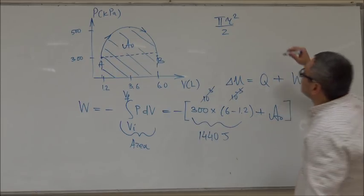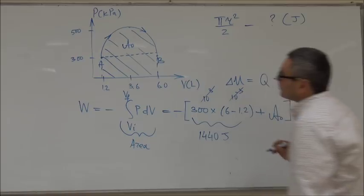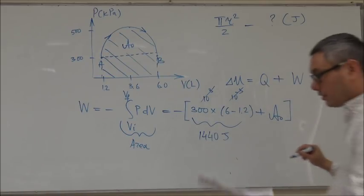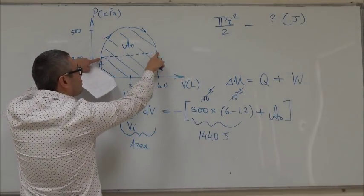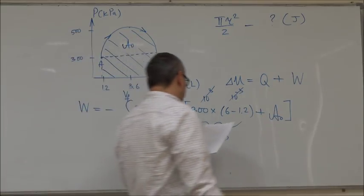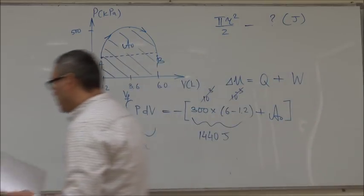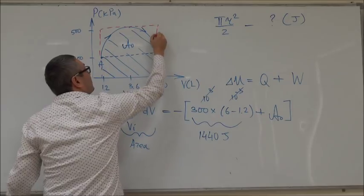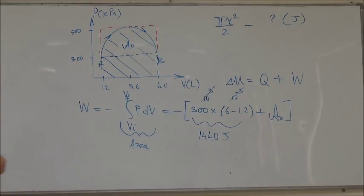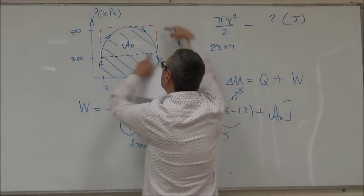And so we want to find what is that area corresponds to in joules. Well you can then make another proportion. If you look at this thing, then this would correspond to 2r. So then you can say that the area which corresponds to a rectangle is equal to 2r times r. This is 2r and this is r.